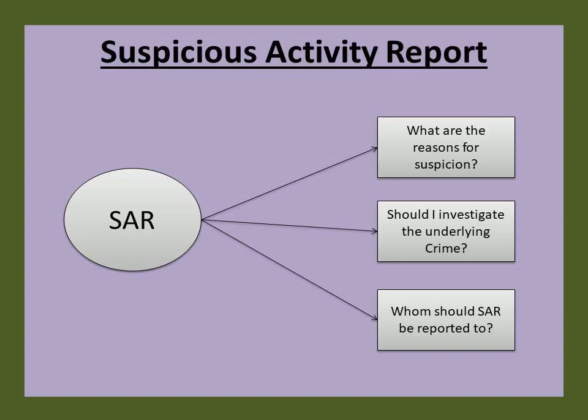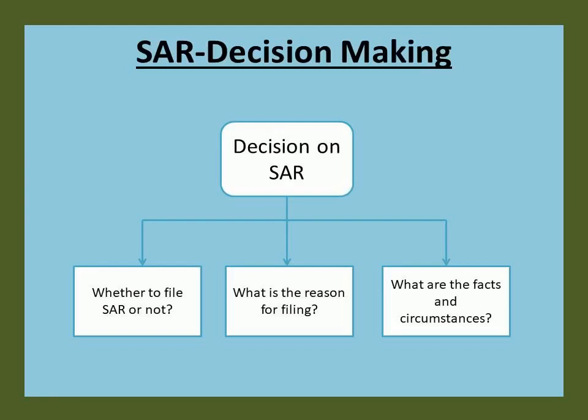When evaluating suspicious activity and completing the SAR, banks should, to the best of their ability, identify the characteristics of the suspicious activity. Going ahead, let us understand the SAR decision-making procedures. The decision-maker, whether an individual or committee, should have the authority to make the final SAR filing decision. When the bank uses a committee, there should be a clearly defined process to resolve differences of opinion on filing decisions. Banks should document SAR decisions, including the specific reason for filing or not filing a SAR. Thorough documentation provides a record of the SAR decision-making process, including final decisions whether to or not to file a SAR.